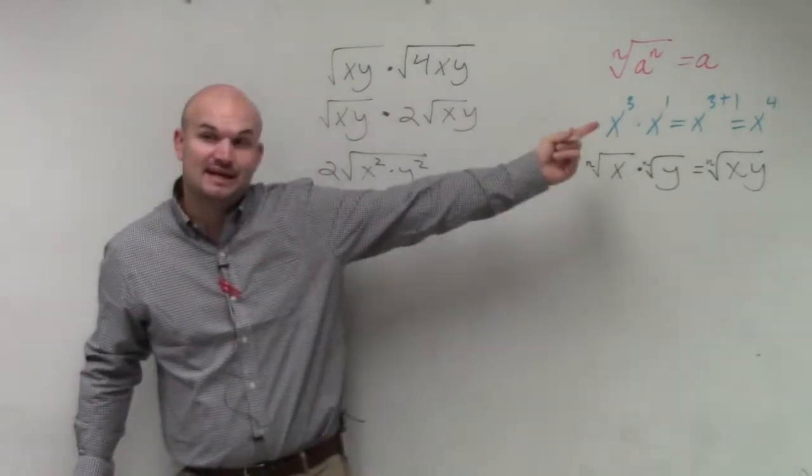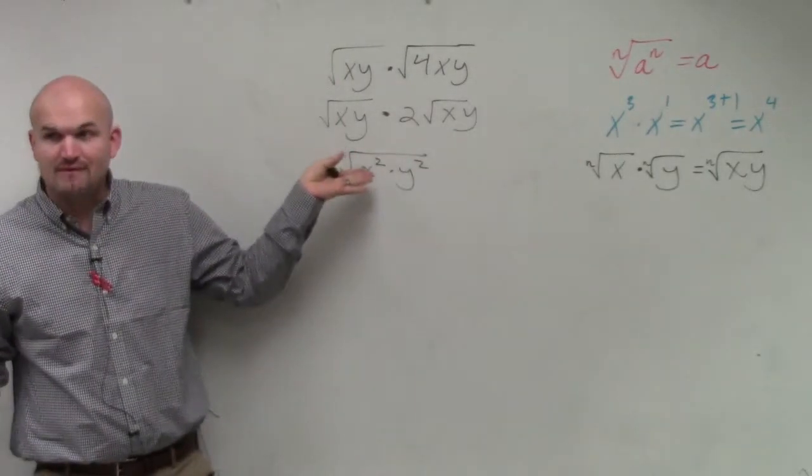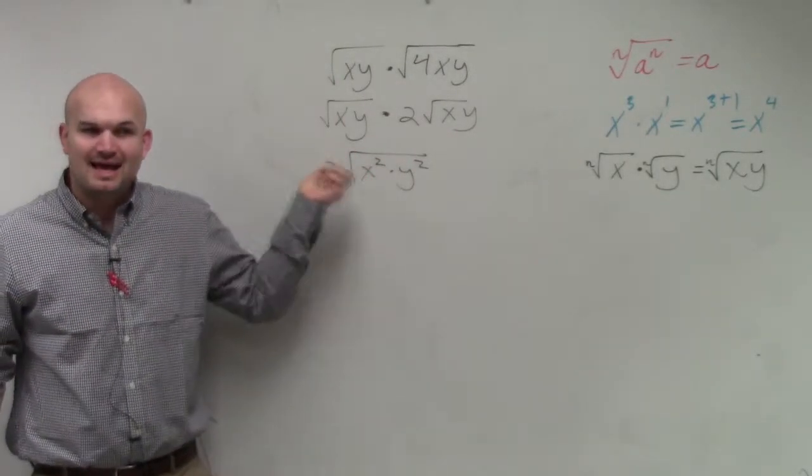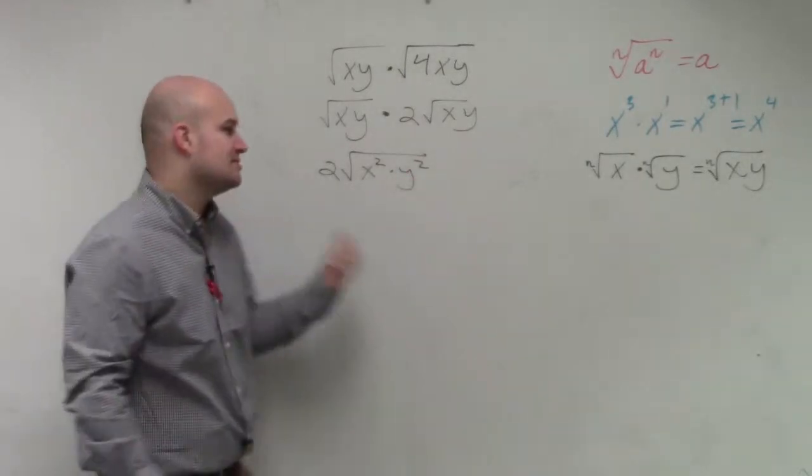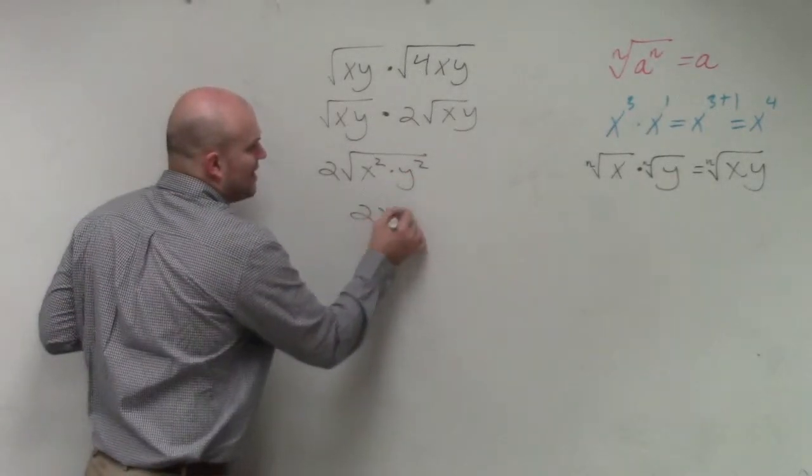Well, remember, going back to the identity element, can you take the square root of x squared, which is just x. And the square root of y squared is just y. So your actual answer is 2xy.